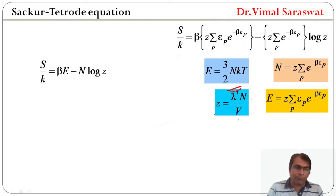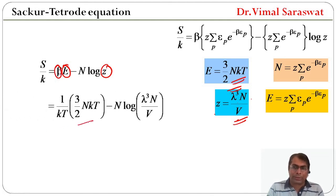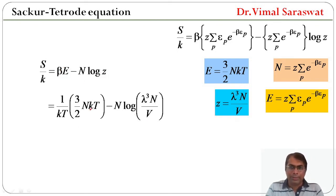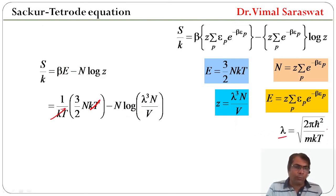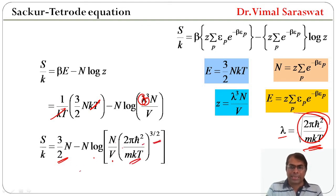Also z equals lambda^3 * N / V, so we replace z by lambda^3 * N / V, E by (3/2)*N*k*T, and beta by 1/(k*T). Then S/k equals (1/(k*T)) * (3/2)*N*k*T minus N * log(lambda^3 * N / V). The k*T terms cancel, and substituting lambda equals sqrt(2*pi*h_bar^2 / (m*k*T)), we get S/k equals (3/2)*N minus N * log(N/V * (2*pi*h_bar^2 / (m*k*T))^(3/2)).